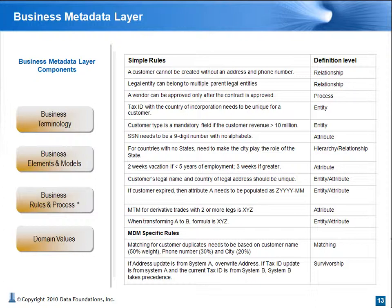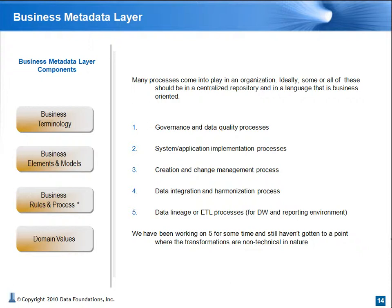The business metadata layer has to be supported by business rules — front-end rules governing basic data entry and Boolean logic, as well as back-end and systematic MDM-type rules that govern data consolidation and enrichment. You need both if you consider that different rules may apply to different systems for purportedly the same attributes. That's where the MDM concept of survivorship is critical, which allows you to impose consolidation rules, overriding input from your claim system by designating invoicing as the best source for address. Additionally, the business metadata layer is best supported by a number of processes written in clear business language and ideally stored in a central repository, such as governance and data quality processes, system application implementation processes, creation and change management processes, data integration and harmonization processes, and data lineage or ETL processes for data warehousing and reporting environments.